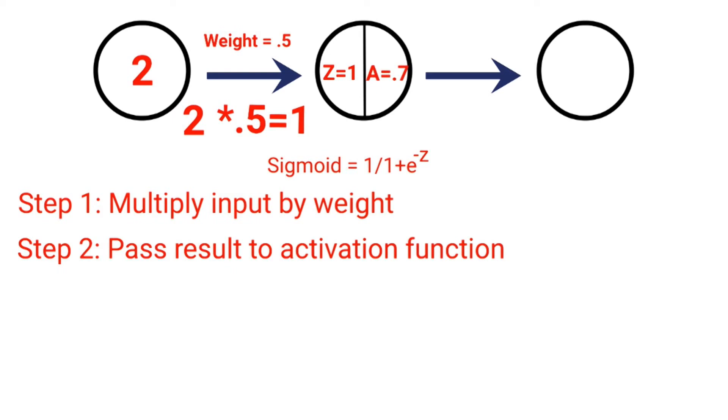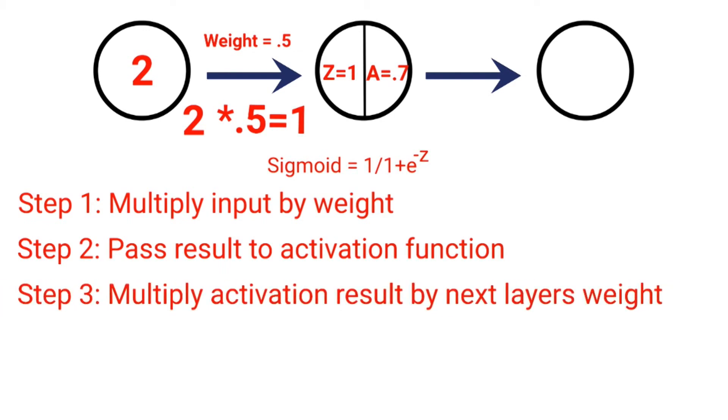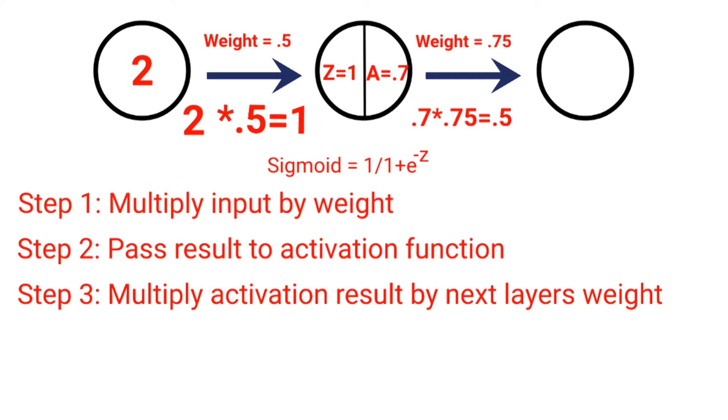Our next step would be to take our activation of 0.7 and multiply that by the weight in our next layer. For this example, let's choose a weight of 0.75. So 0.7 times 0.75 equals 0.5. So now we'll repeat the process and pass that result, or z, to our activation function. And that will give us our final output of 0.6. Now that is our prediction.